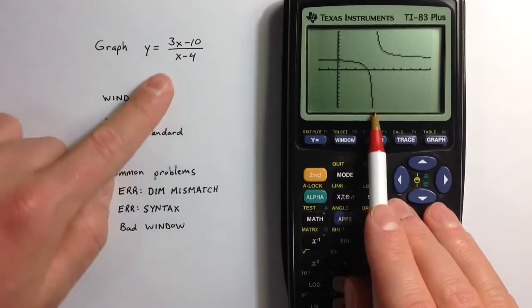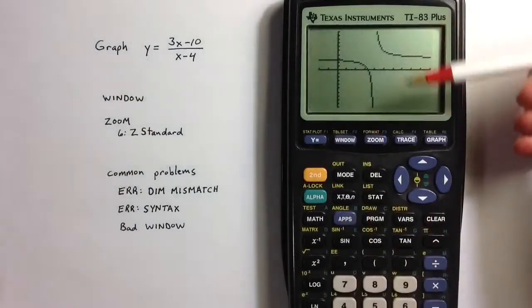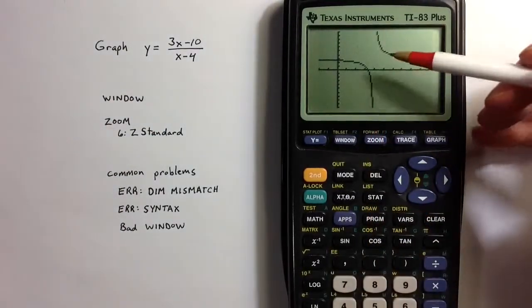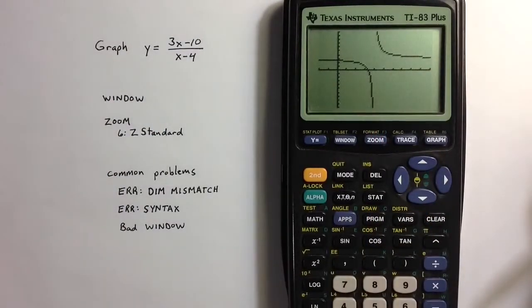And because the expression is undefined there, the calculator sees the problem, and so it doesn't graph the false line.